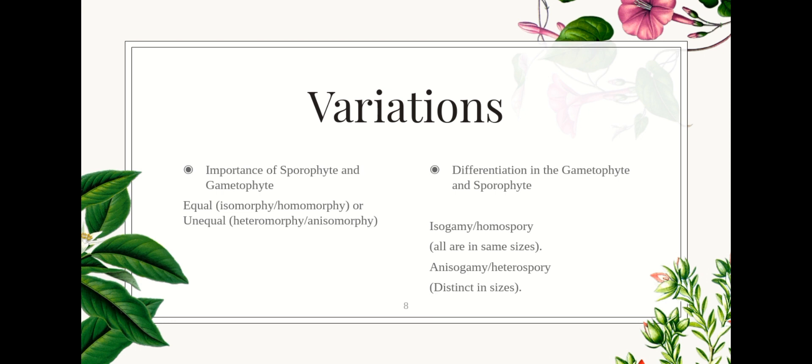Next is the differentiation in the gametophyte and sporophyte. This can either be isogamy or homospory, where all spores are the same size, or anisogamy or heterospory, where spores are distinct in size. For isogamy or homospory, an example is Cladophora. It has flagellated gametes which are identical in appearance and ability to move. For anisogamy or heterospory, an example is Chara. It has gametes which all have two flagella and are motile; however, they are two sizes — larger female gametes and smaller male gametes.